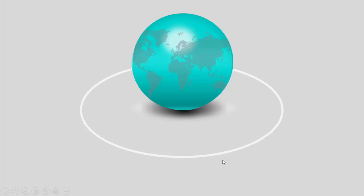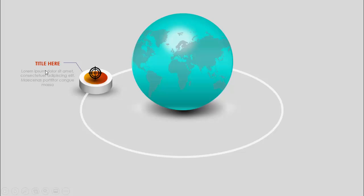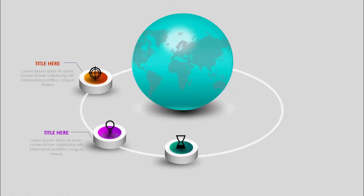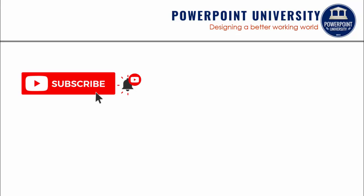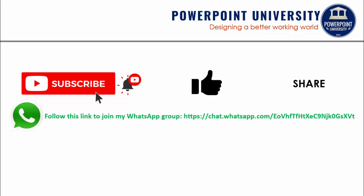I've put one oval border shape here, and when I click the first option comes, then the icons come from the top — you can add the title and detailed text. On the next click the second option comes with a different gradient fill, then the third, fourth, and fifth options. If you have not subscribed to my channel PowerPoint University, please subscribe now and enable the bell notification icon, and share and like my channel.